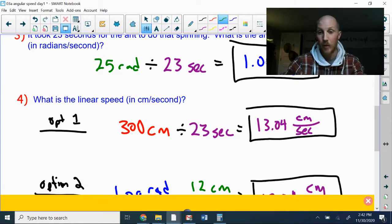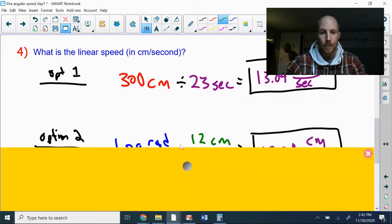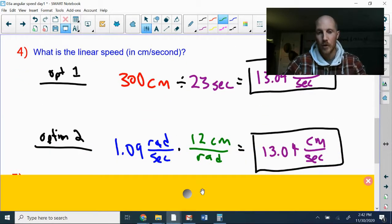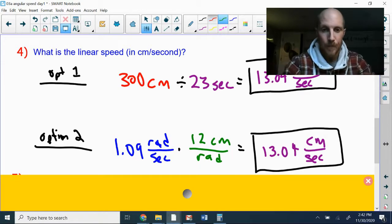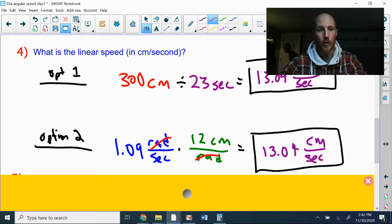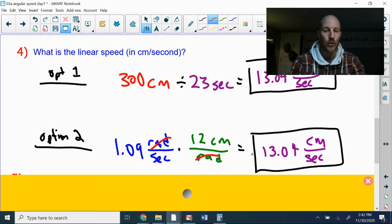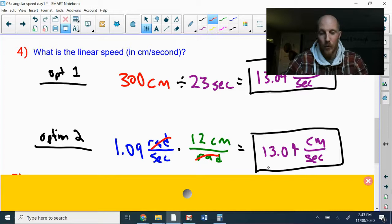Okay, well for linear speed we do have another option. If we convert the previous answer we had—number three, that angular speed 1.09 radians per second—we can convert that using the conversion factor 12 centimeters per radius, and radians are going to cancel. We're left with centimeters on the top, seconds on the bottom. 1.09 times 12 gives me 13.04 centimeters per second. It's the same answer either way. It really doesn't matter; it's just a matter of what you're more comfortable with.